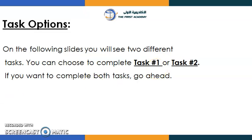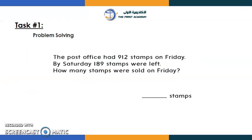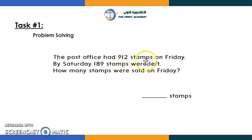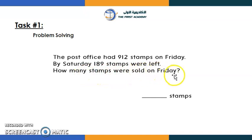Task number one is problem solving: the post office had 912 stamps on Friday. By Saturday, 189 stamps were left. How many stamps were sold on Friday?